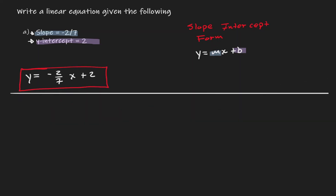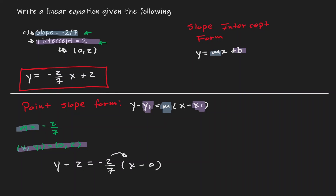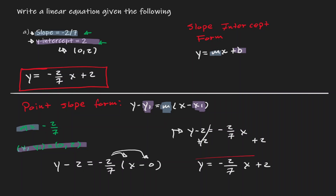Notice that we could also use the point-slope form. If we know the y-intercept is two, that's also a coordinate point at zero comma two. The slope is negative two-sevenths and the coordinate point is zero comma two, so we plug those into our equation: m equals negative two-sevenths, and x1,y1 equals zero comma two. We can simplify by distributing and then adding two — and we end up with the same equation.